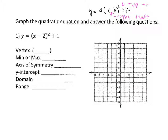Looking at this problem, I notice there's a minus 2 on the inside, so that immediately tells me it's moving right. So this is moving right 2. Then I see a plus 1 on the outside, so if it's a plus on the outside, it's moving up — up 1. We always start from the origin and then move in that shift, so right 2, up 1 hits right there on the coordinate point.